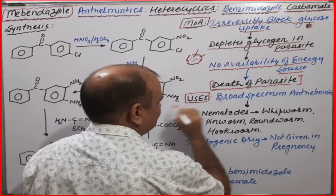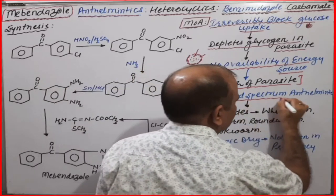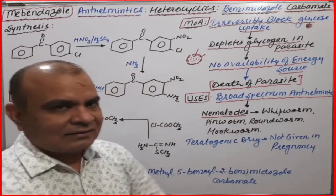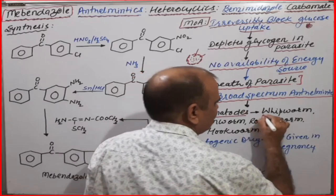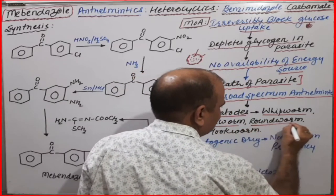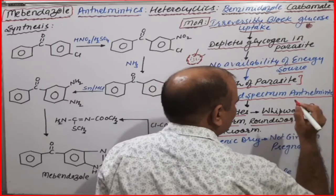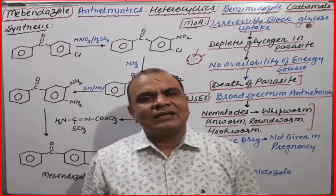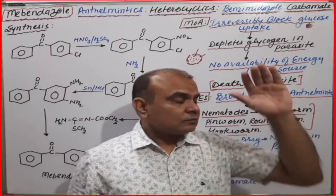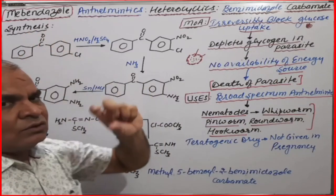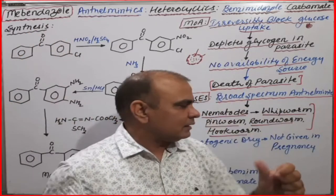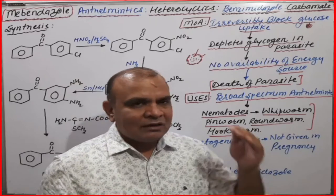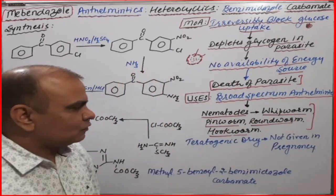The uses of Mebendazole — it is basically a broad spectrum anthelmintic. It belongs to the nematode category. Most nematodes are treated with Mebendazole, that is whipworm, pinworm, roundworm, and hookworm. These are the different nematodes which are present as parasites in the human body or GIT. When we give Mebendazole to the respective patient, those nematodes — whipworm, pinworm, roundworm, and hookworm — will be expelled out through fissure.